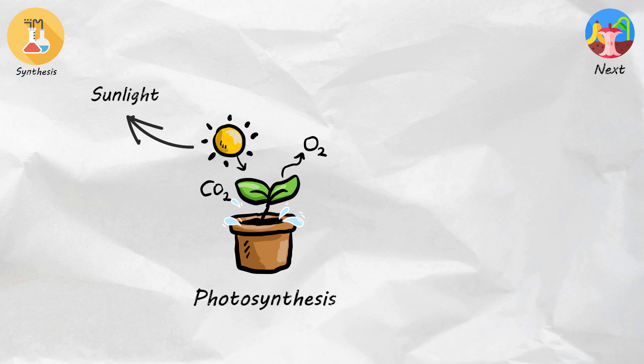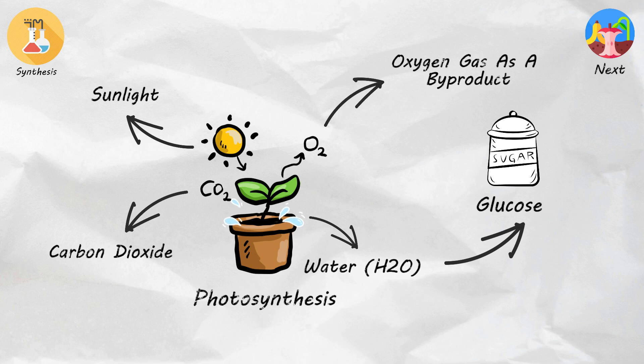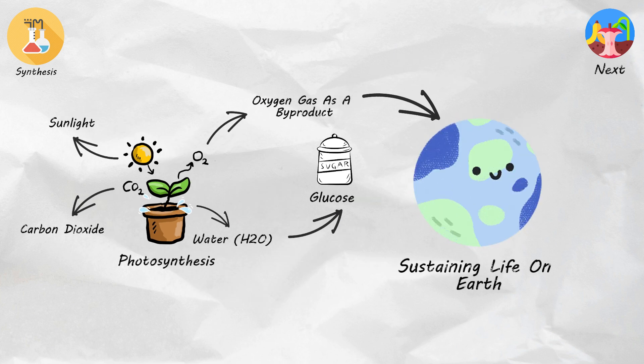An example is the famous photosynthesis. Plants combine sunlight, carbon dioxide, CO2, and water, H2O, to produce glucose, a form of sugar, as food and oxygen gas as a byproduct, sustaining life on Earth.